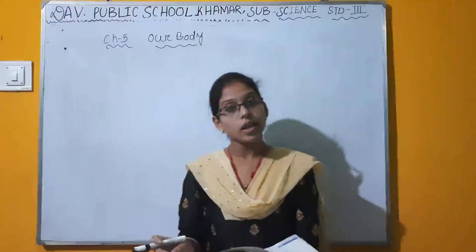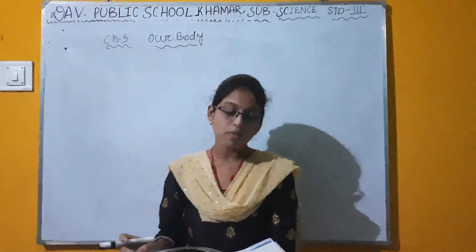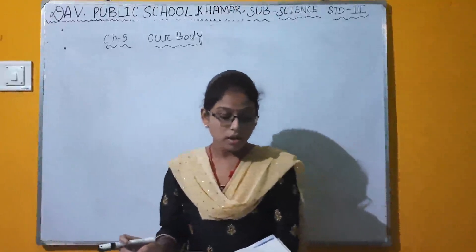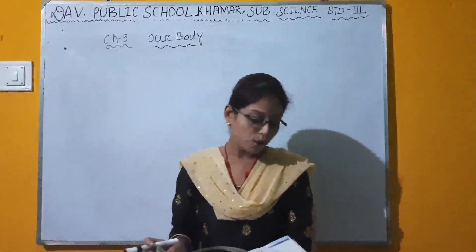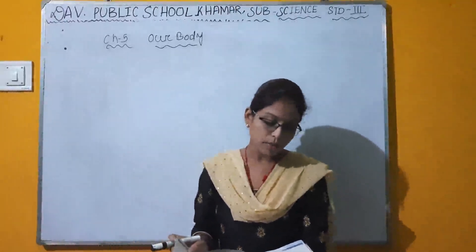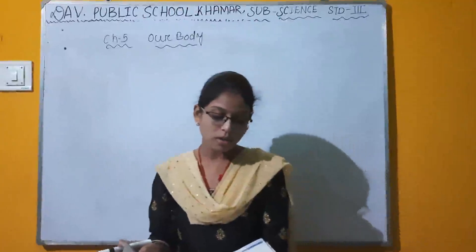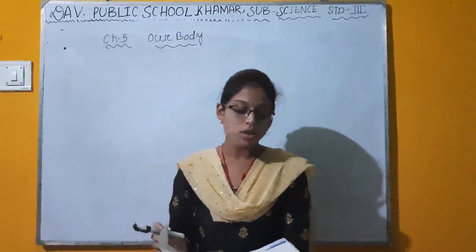The body has eight organ systems: skeletal system, muscular system, digestive system, respiratory system, nervous system, circulatory system, excretory system, and reproductive system.